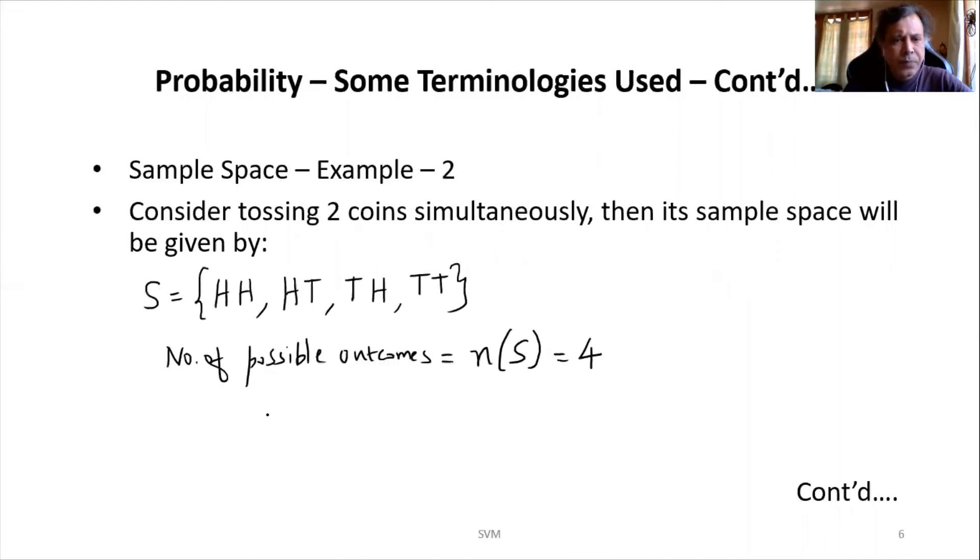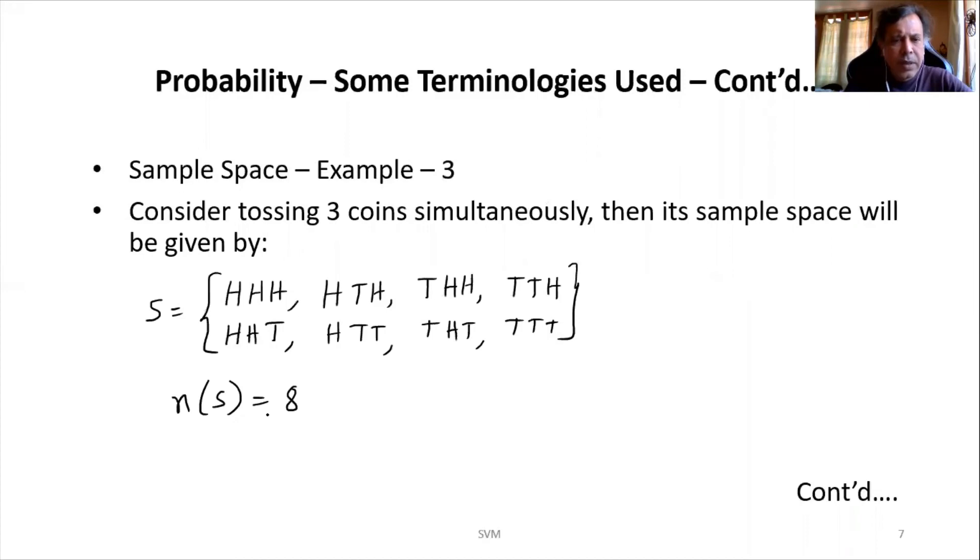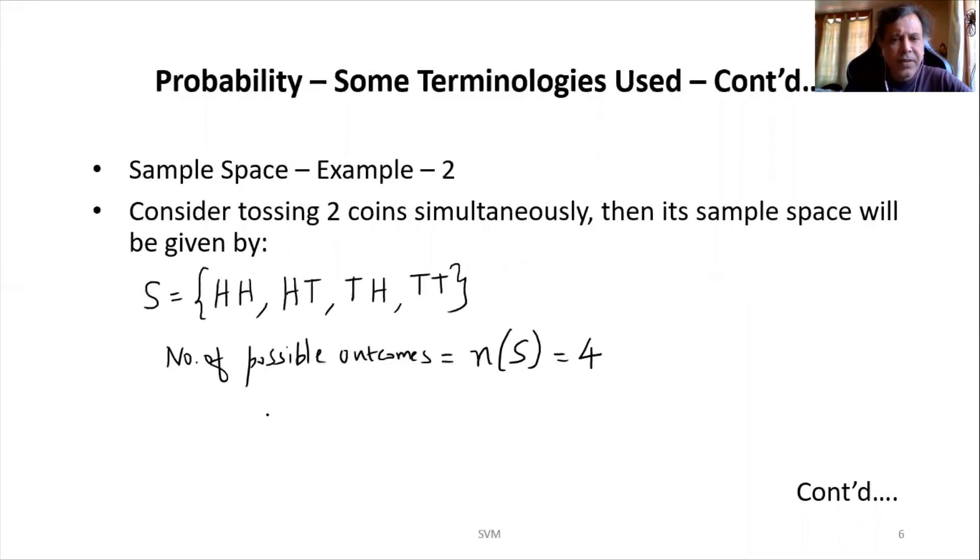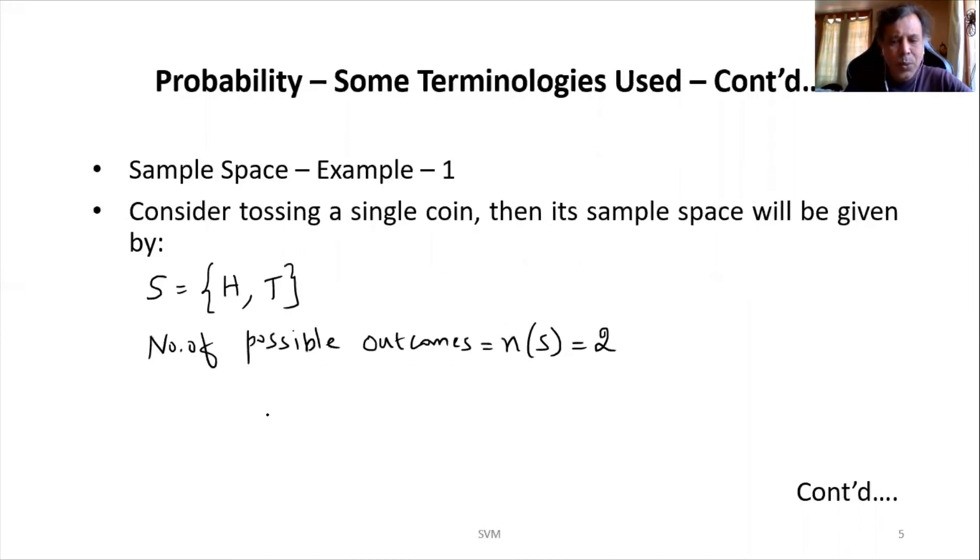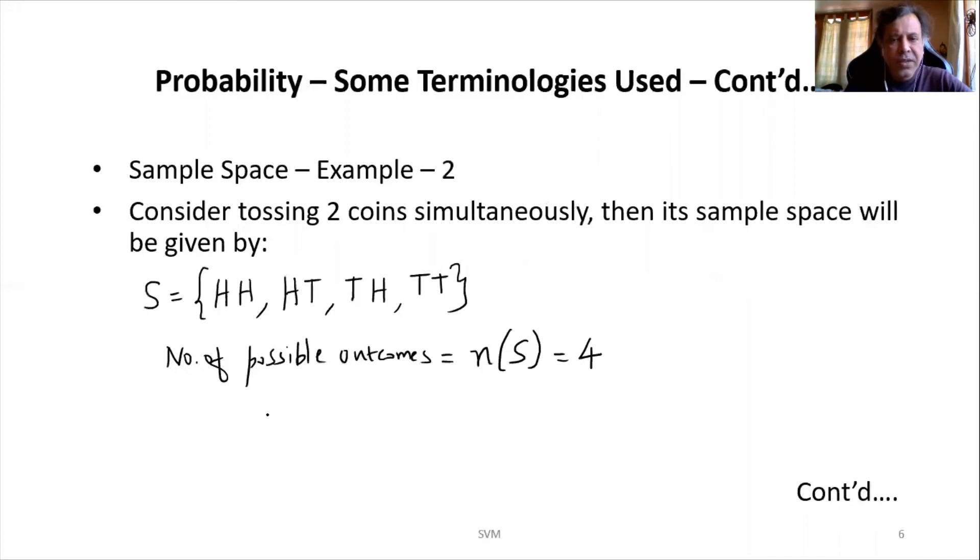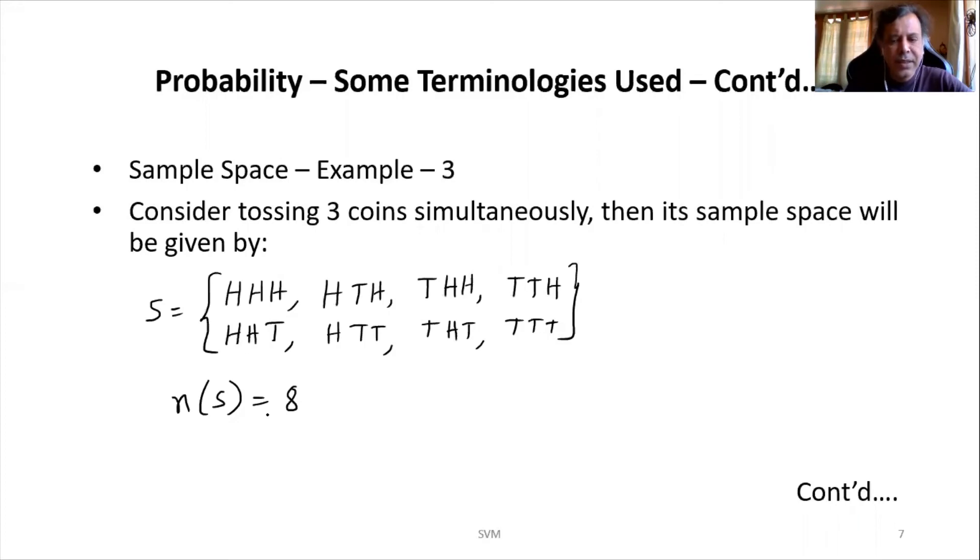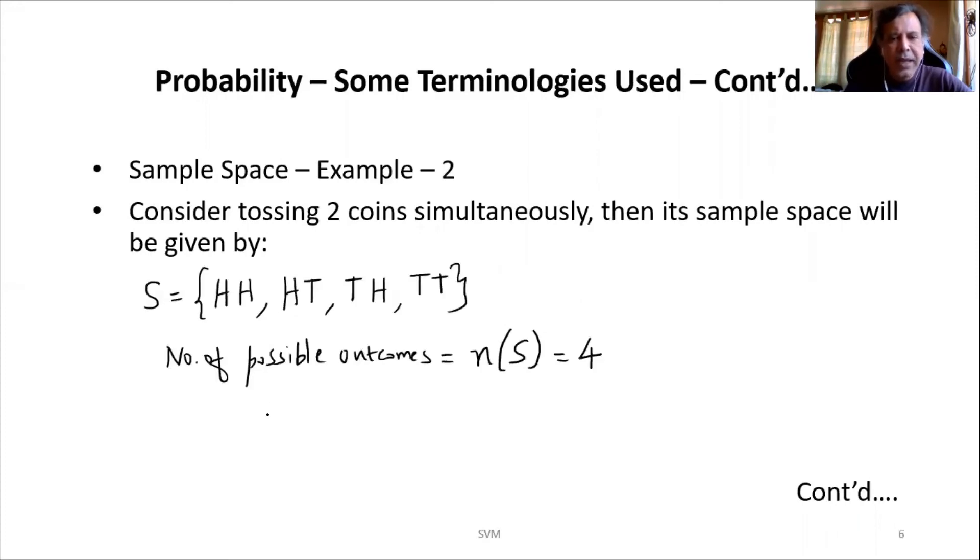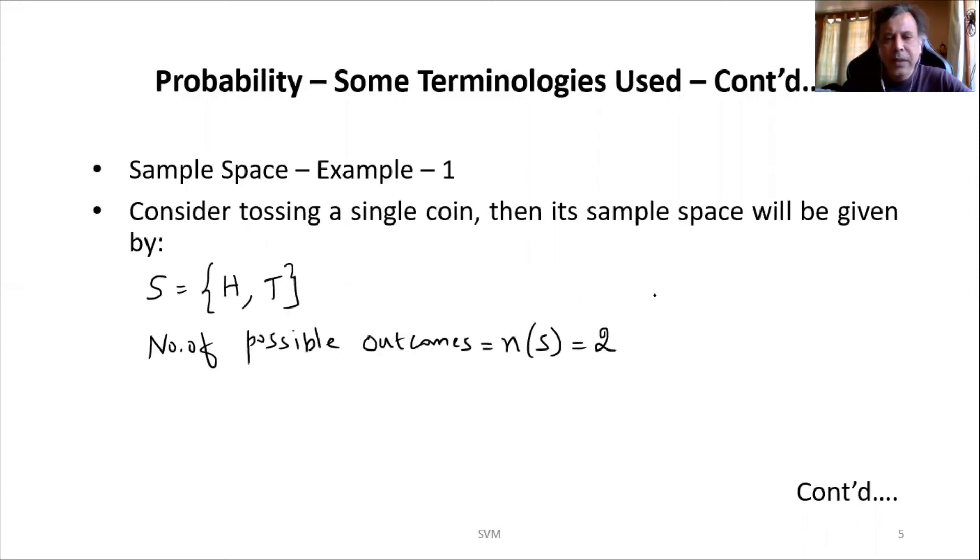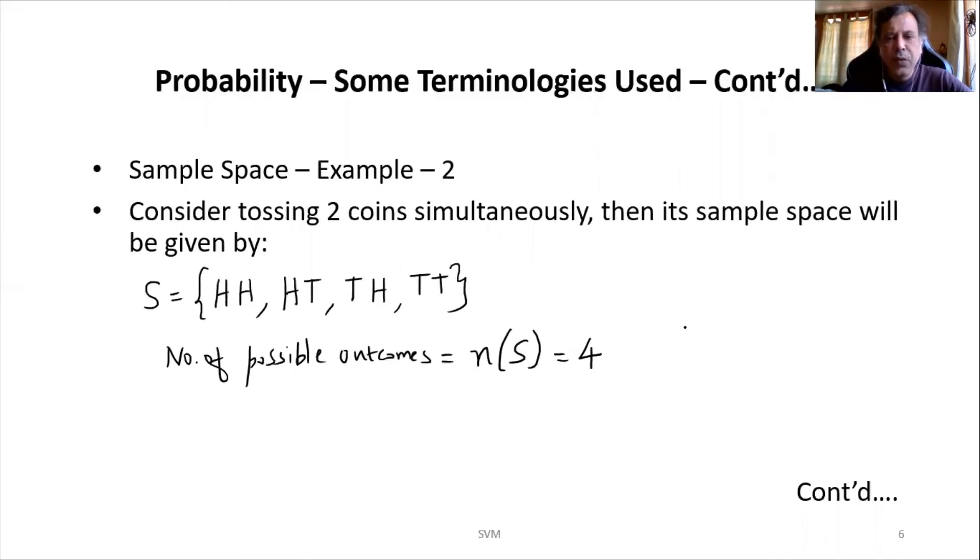And the previous case also let us write. That is for three coins tossing, the number of all possible outcomes—that is N(S)—is 8. We may notice the first one, it is 2; second one, it is 4; third example, it is 8. For a single coin tossing, it is 2, and two coins tossing it is 4, and three coins tossing it is 8.